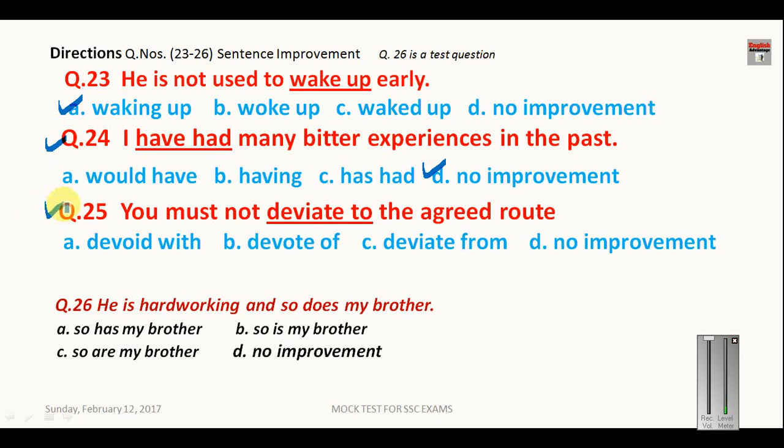Let us see question number 25. You must deviate to the agreed route. Deviate is followed by from. So here your answer will be C. And this is the test question. You have to figure out the answer of this question and send me through the comment box.